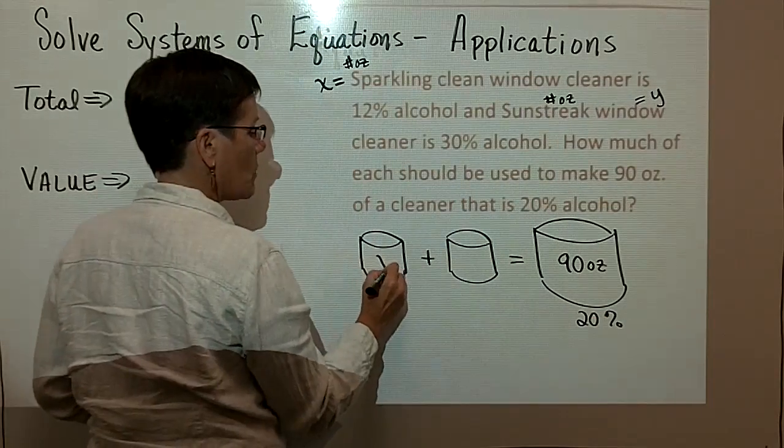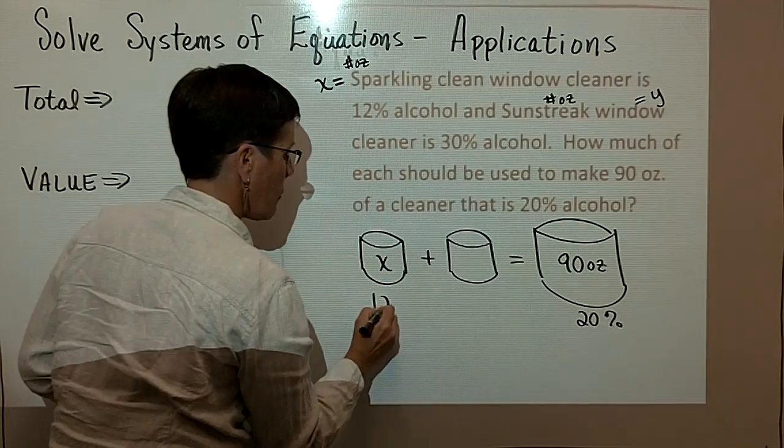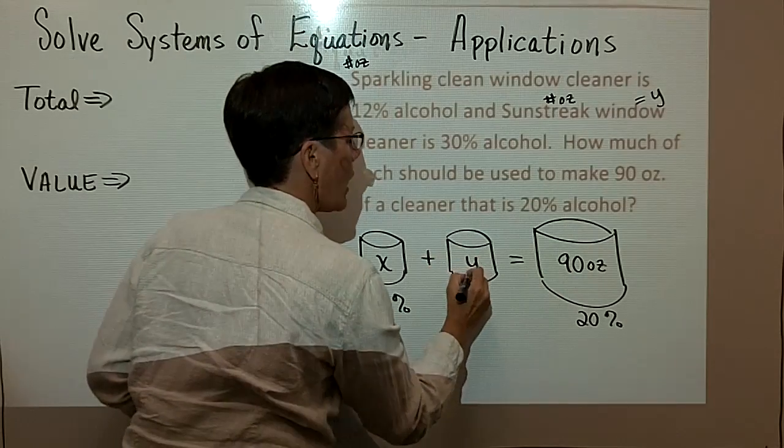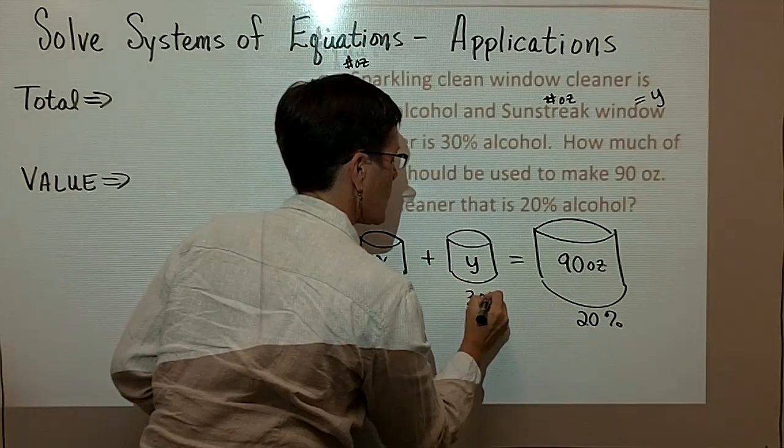Sparkling cleaner, which is going to be X, is a 12% solution. And the Sunstreak window cleaner, which is going to be Y, is a 30% solution.